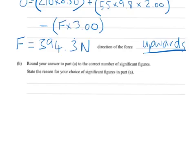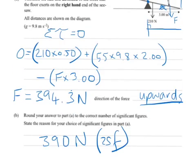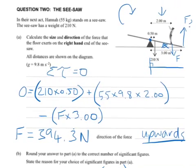Round your answer in part A to the correct number of significant figures. To do so would give us 390 newtons, which is 2 significant figures. And the reason we've got 2 significant figures is, as you see, we've got the least number of significant figures in the raw data.